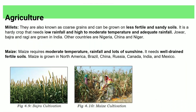Millet is also known as coarse grain. It grows in less fertile sandy soil, with low rainfall and high to moderate temperature. Leading producers include Nigeria, China, and other countries.